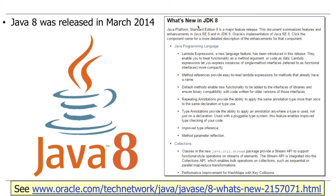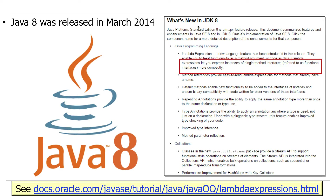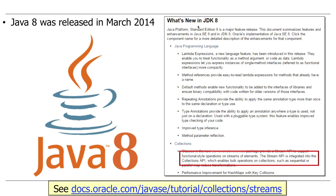Java 8 has been out for about three years — it was released in March of 2014, so almost three and a half years. One of the things it has is Lambda Expressions and Method References, which are the functional programming features it adds. Of course, it's long had all the object-oriented features, and it also has some really cool things like the Streams API and completable futures.